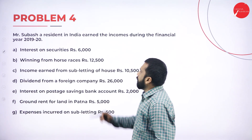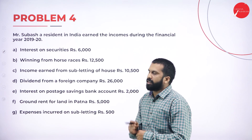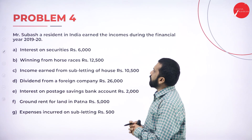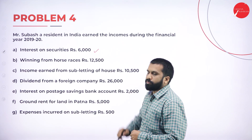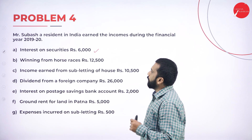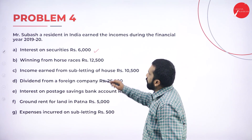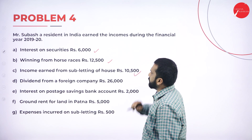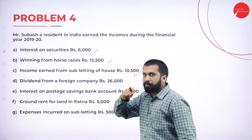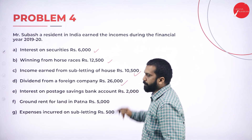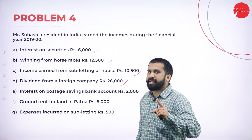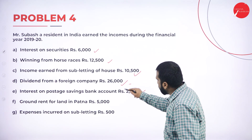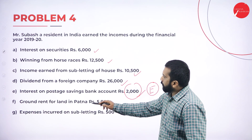Problem number four: Mr. Subash, a resident in India, earned the following income during financial year 2019-20. Interest on security 6,000 — taxable, but if it is UTI we would not consider it. Winning from horse race above 10,000 — consider it. Income earned from subletting of house — consider it, minus any adjustments. Dividend from foreign company — fully taxable. Indian company: up to 10 lakh exempted. Interest on post office savings: up to 3,500 exempted; here it is 2,000, so fully exempted.